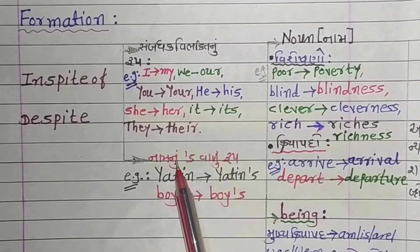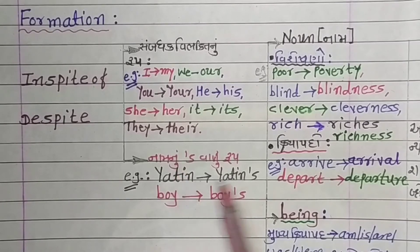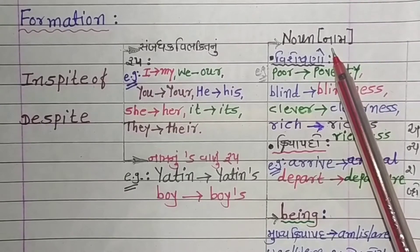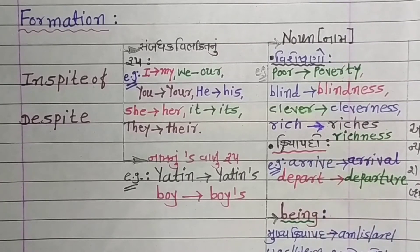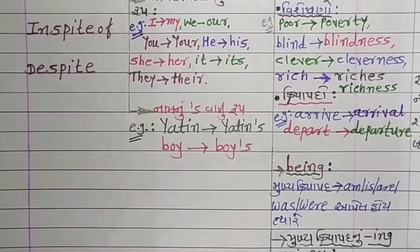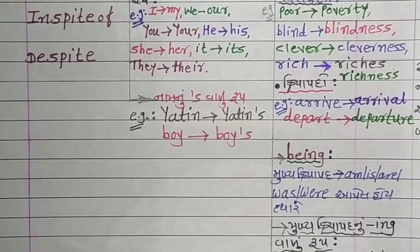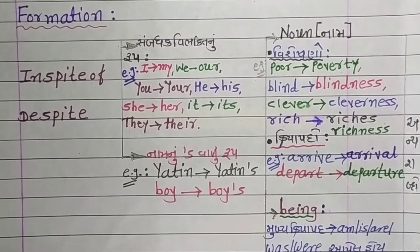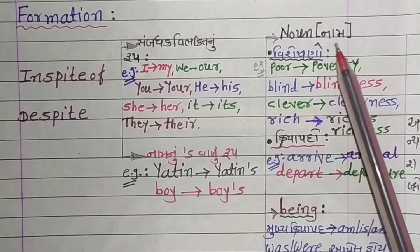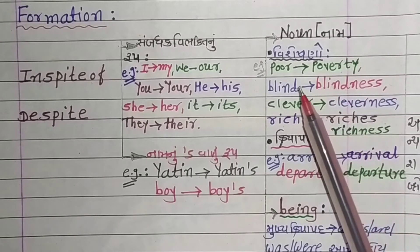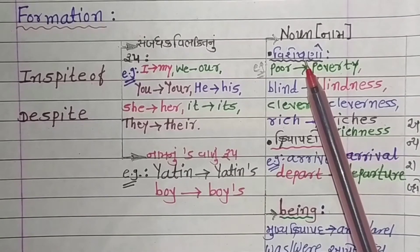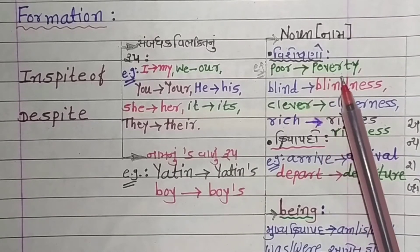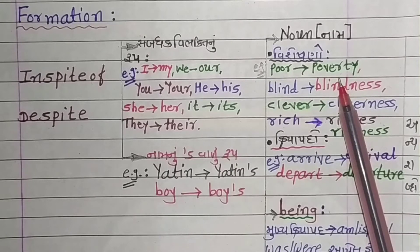This method is used after 'in spite of' or 'despite.' After these keywords, a noun comes. There are three methods: the noun method, the 'being' method, and the ING form of the main verb method.